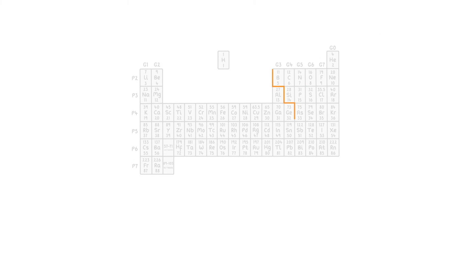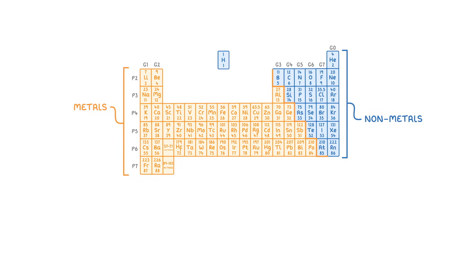Sometimes you might see a zigzag line running here, from aluminum to polonium. This line separates the metals, which include everything to the left in orange, from the nonmetals on the right, still in blue. So as you can see, there are lots more metals than there are nonmetals.